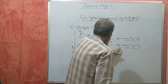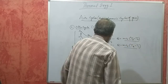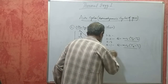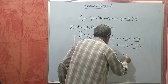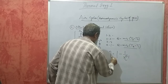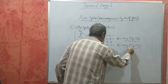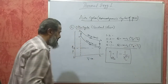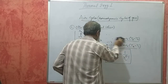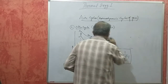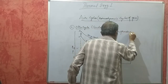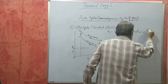Substituting the heat absorbed and heat rejected values into the efficiency formula and simplifying, the air standard efficiency of the Otto cycle is: η = 1 − 1/R^(γ−1), where R is the compression ratio, defined as V1/V2.